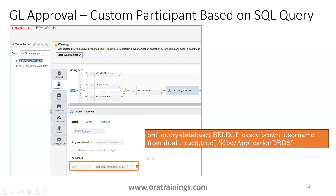Here I've added a participant called XXORA_APPROVAL. The participant name is XXORA_APPROVAL, the assignee is based on names and expression, the assignees list is based on user, and in this user field I've mentioned a query: SELECT cassie.brown — which is my username — FROM dual.